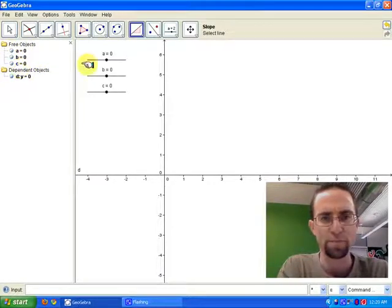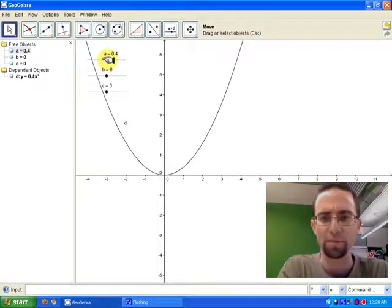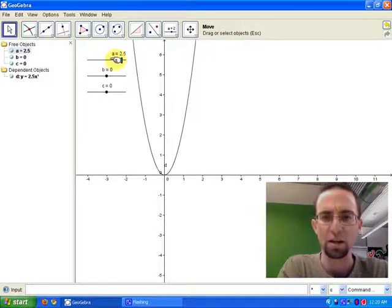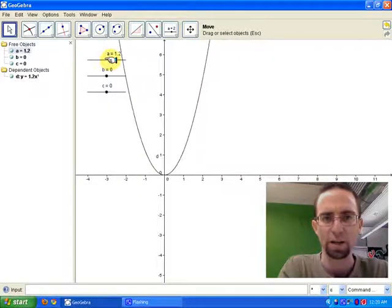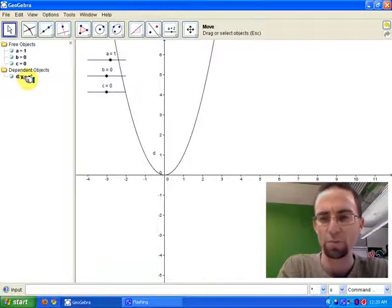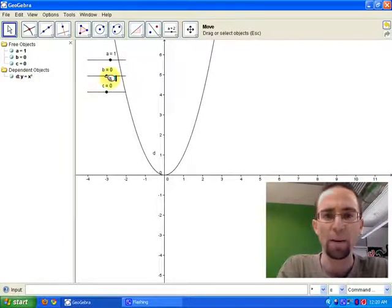Turn on my sliders, and as I shift A positive, you can see the parabola change because now it's, like I'll leave it at 1, now it's Y equals X squared. So there's our equation there, and you can see that over here.